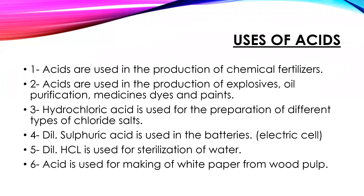Uses of acids: Acids are used in the production of chemical fertilizers, explosives, oil purification, medicines, dyes, and paints. Hydrochloric acid is used for the preparation of different types of chloride salts. Diluted sulfuric acid is used in batteries, that is electric cells. Diluted HCl is used for sterilization of water. Acid is used for making white paper from wood pulp.